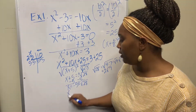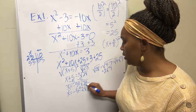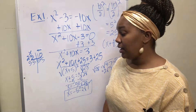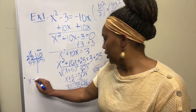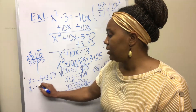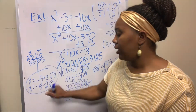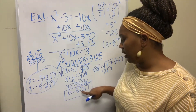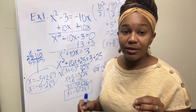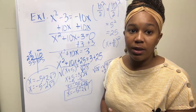So the final answer is negative 5 plus or minus 2 square root of 7. That is two separate answers: x equals negative 5 plus 2 square root of 7, and x equals negative 5 minus 2 square root of 7. You can write them separated or together with the plus or minus. This is an example of solving a quadratic equation using the completing the square method.